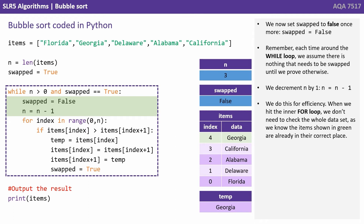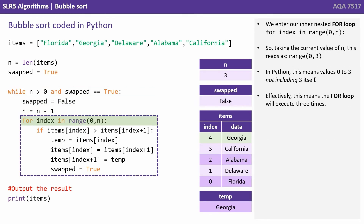We do this for efficiency — when we hit the inner for loop, we don't need to check the whole data set, as we know the items shown in green are already in their correct place. We enter our inner nested for loop for index in range 0 to n, so taking the current value of n this reads as 0 to 3. In Python this means values 0 to 3, not including 3 itself. Effectively, this means the for loop will execute 3 times.